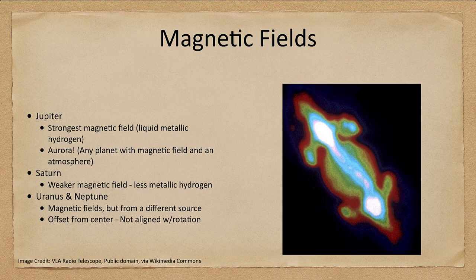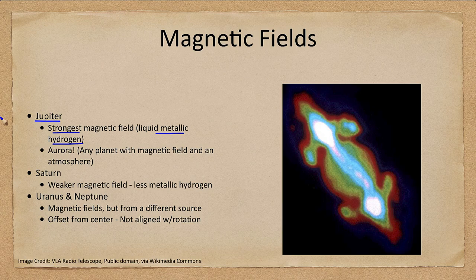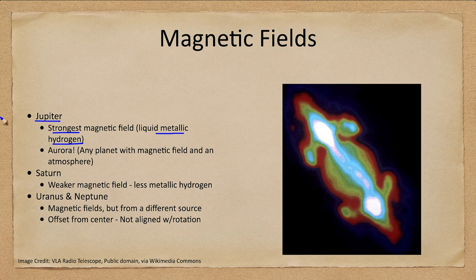Magnetic fields exist on all of the planets to differing effects. Jupiter has the strongest magnetic field because of that large amount of liquid metallic hydrogen. Remember when we get a magnetic field — on Earth we had a molten outer core that trapped electrical currents and generated a magnetic field by its rotation. Mars and Venus had solid metal cores and therefore did not generate magnetic fields, but Mercury had at least a partially liquid core and does have a magnetic field. Jupiter's is by far the strongest because of that metallic hydrogen compressed so much that it behaves like a metal.